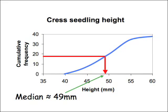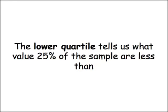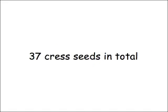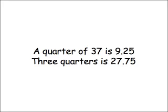Having found the median, we can go on and find the quartiles. Quartiles, as the name suggests, have to do with quarters. They can give you some information on how spread out your data is, and they can also tell you something about the middle 50% of your data items. The lower quartile tells us what value 25% of the sample are less than, and therefore 75% more than. The upper quartile is just the reverse. There are 37 cress seeds in total, so a quarter of 37 is 9.25, and three quarters is 27.75.